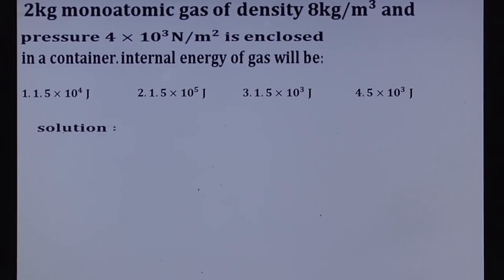The 2 kg monoatomic gas of density given as 8 kg per cubic meter and pressure given 4 into 10 cube newton per meter square is enclosed in a container. The internal energy of gas we have to calculate. The options given here: the first option is 1.5 into 10 power 4 joules, second option is 1.5 into 10 to the power 5 joules, third option is 1.5 into 10 cube joules, and fourth option is 4.5 into 10 cube joules.